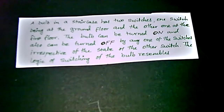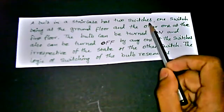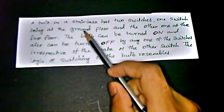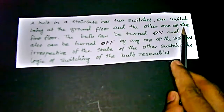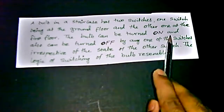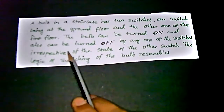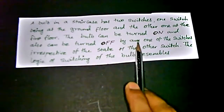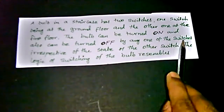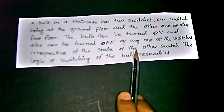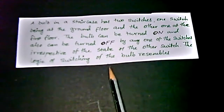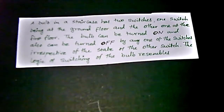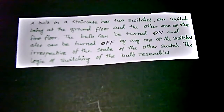A bulb in a staircase has two switches — one at the ground floor and one at the first floor. The bulb can be turned on or off by any one of the switches, irrespective of the state of the other switch. The logic of this switching resembles a particular kind of logic gate, which we will determine in this question.